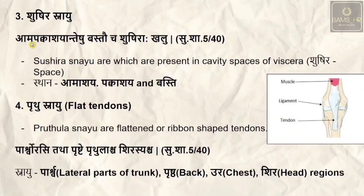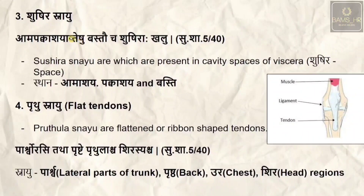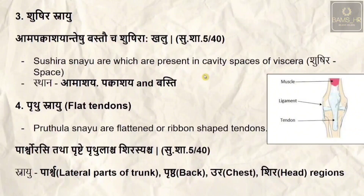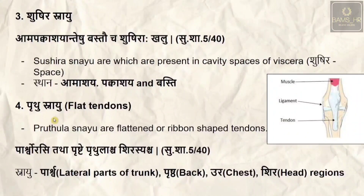The third type is shushira snayu. The sloka states: amapakvashyanteishu baste cha shushira ha — shushira snayu are mainly soft tissue structures present in the cavity spaces of viscera. For example, the structures present in amasya and pakvashaya (stomach and intestines) and basti are considered shushira snayu.